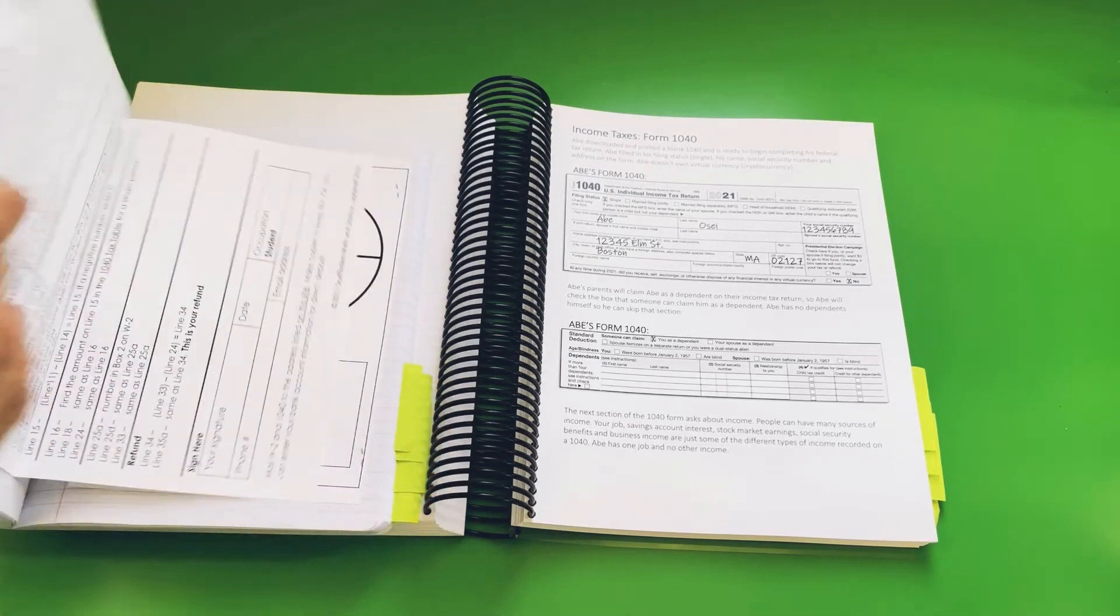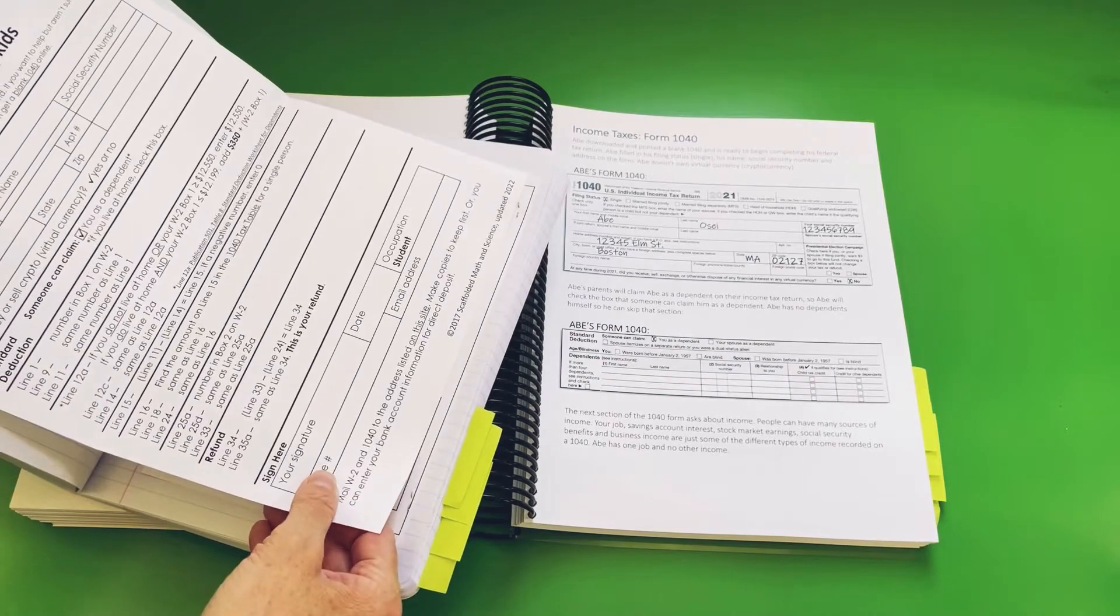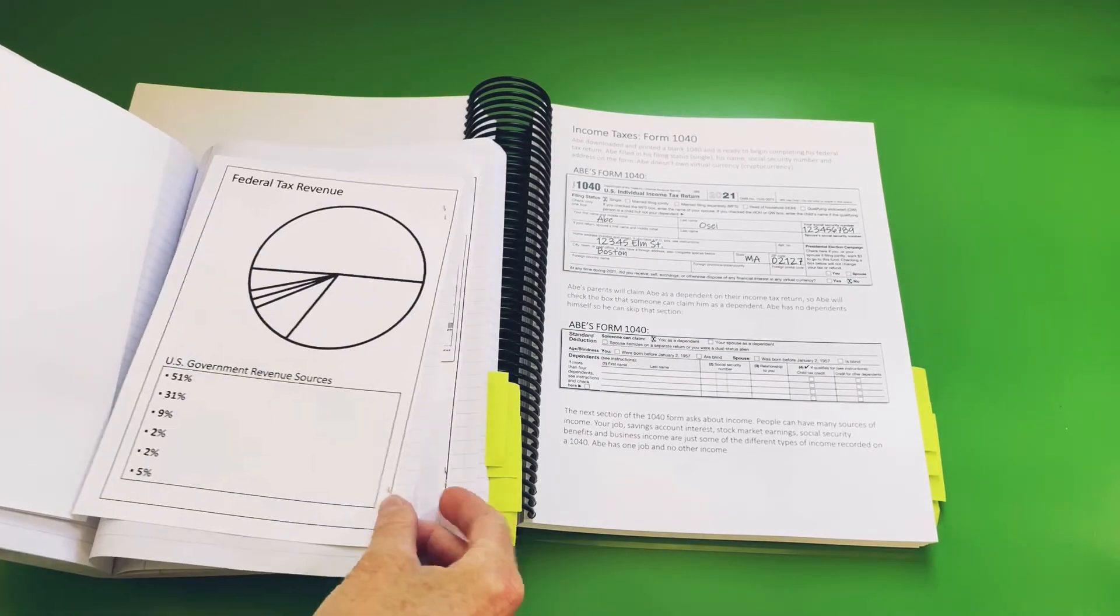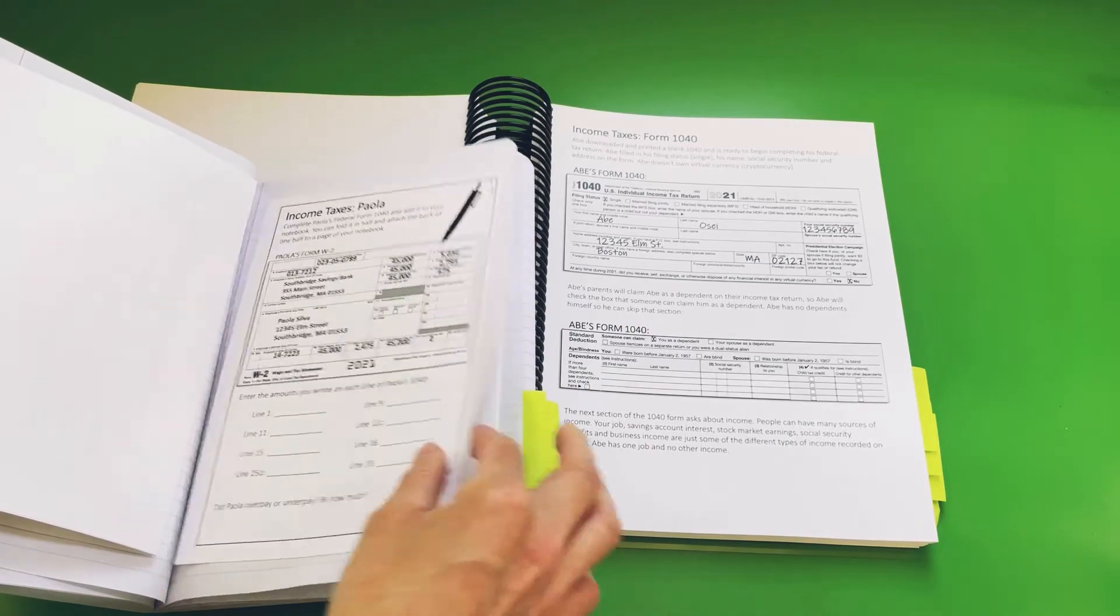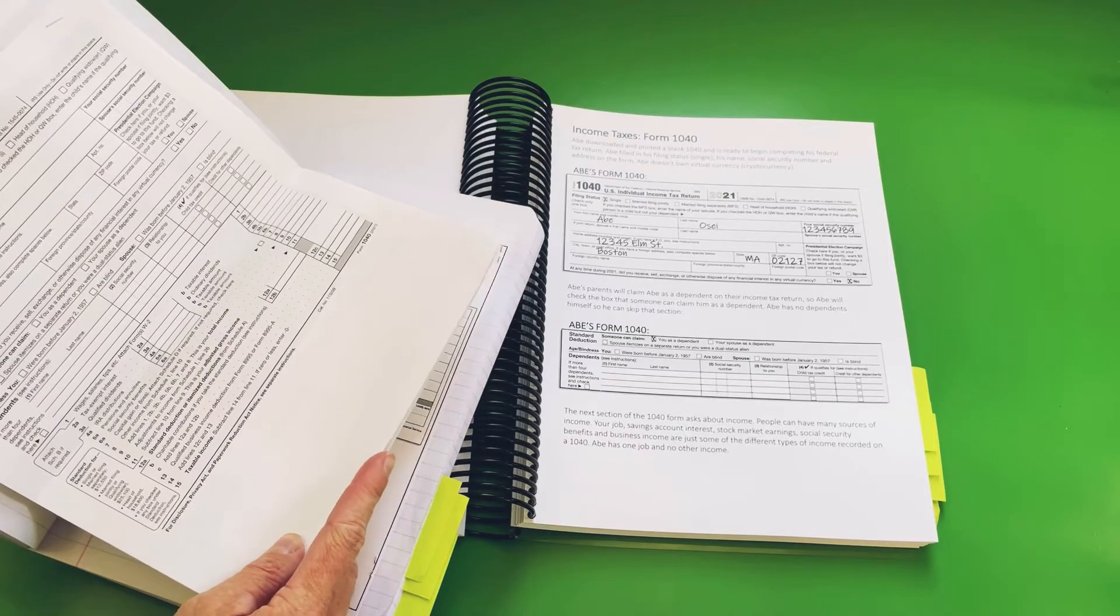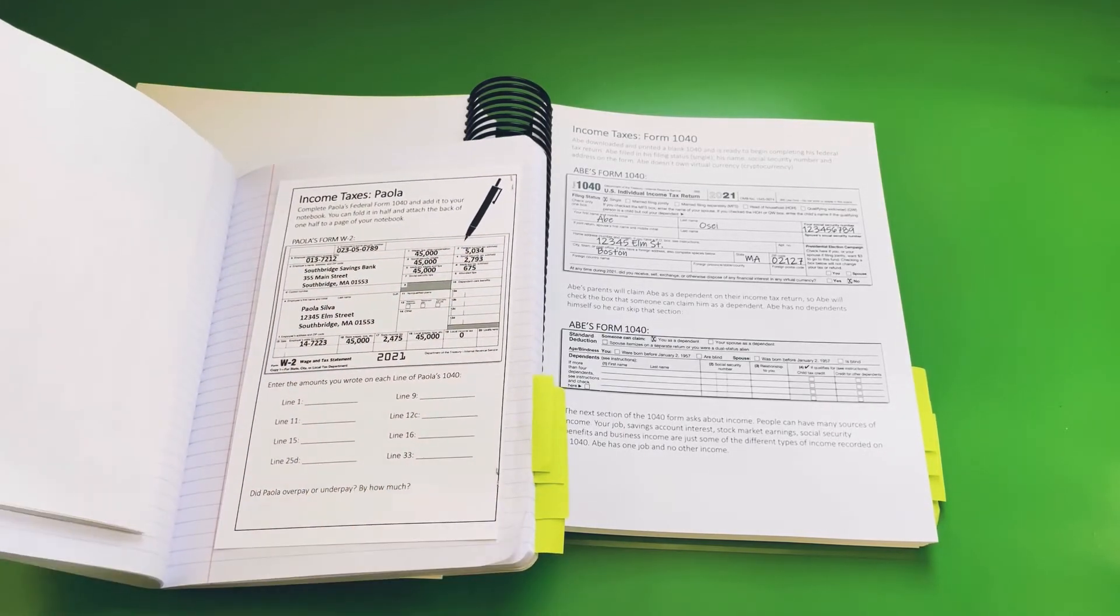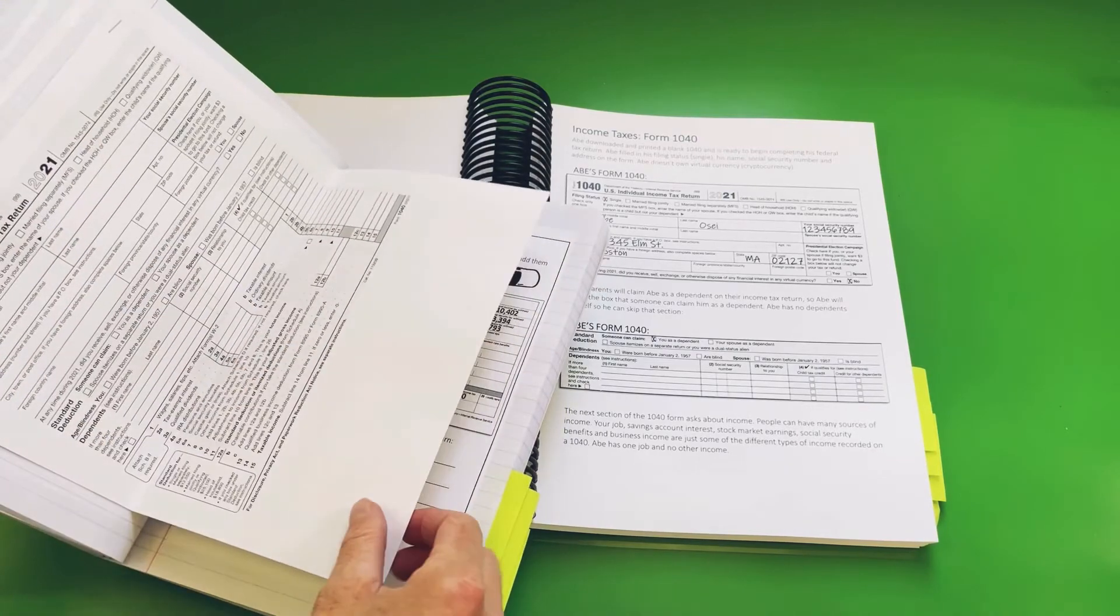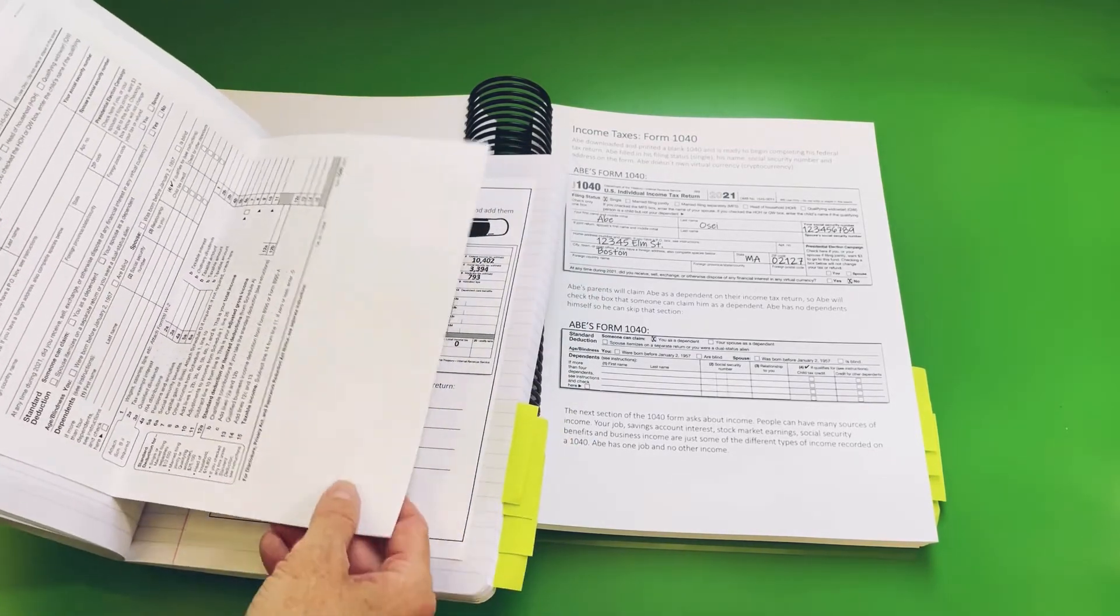So the income taxes section will have other whole pages to print out. And then we have Paola and Dylan who the students will complete tax returns for based on their W-2 information. So you can print those off from the IRS website, but I also put a link in the document for that.